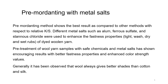Pre-mordanting with metal salts shows the best results compared to other methods with respect to relative K/S. Different metal salts such as alum, ferrous sulphate, and stannous chloride were used to enhance fastness properties — light, wash, dry and wet rubbing fastness, and perspiration of dyed wool yarn. Pre-treatment of wool yarn with safe chemicals and metal mordants has shown encouraging results with better fastness properties and enhanced colour strength values.